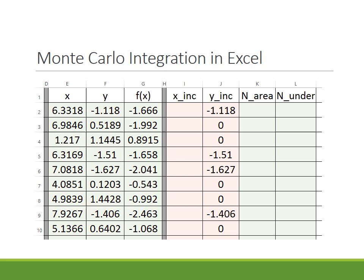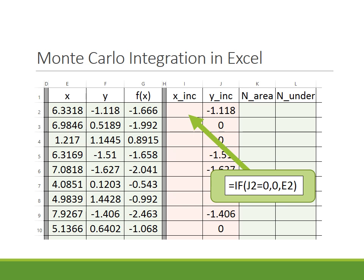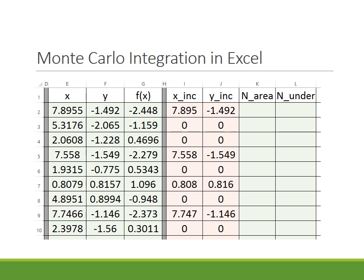Some calculated values show that where column J has zero, the random Y is not between the axis and the function. We do something similar for X: we include the random X value only if the included Y value is non-zero. Since the Y calculation is already done in column J, column I simply checks if J is zero — if so, return zero; otherwise take the random X from column E. Columns I and J together show the points counted in the area calculation.